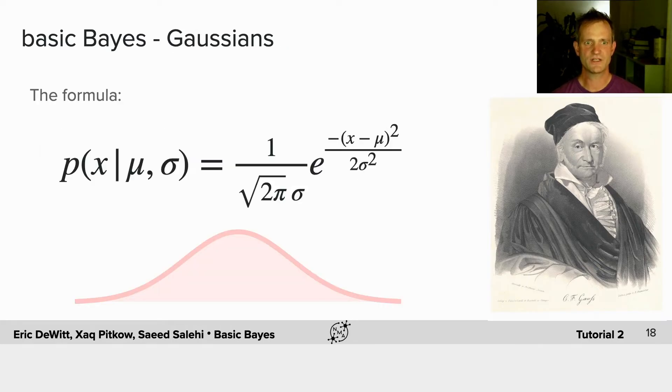The formula is pretty simple. The probability over dimension x has two parameters: the mean, or the center, which we use the Greek letter mu to refer to, and the standard deviation, which is referred to with the Greek letter sigma, and the variance, which is sigma squared.